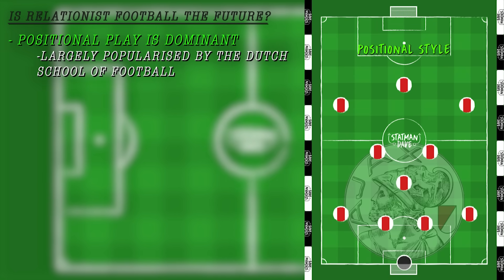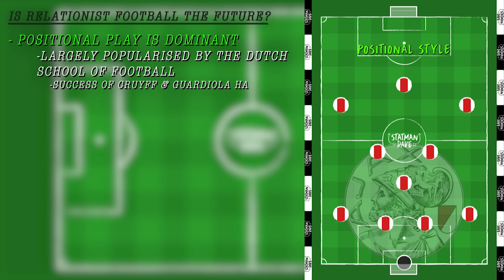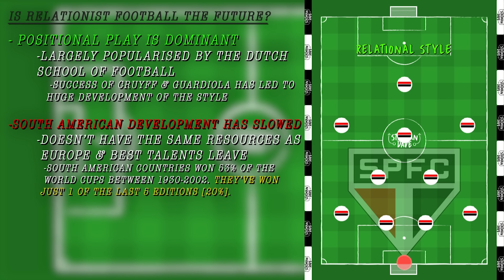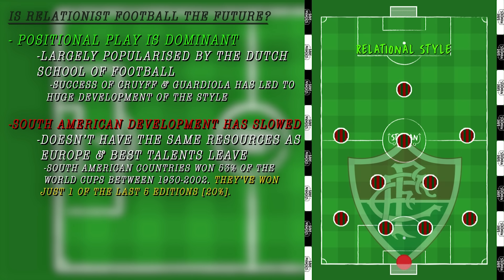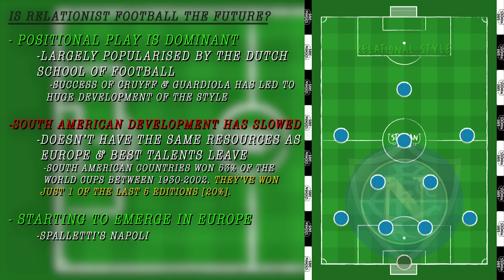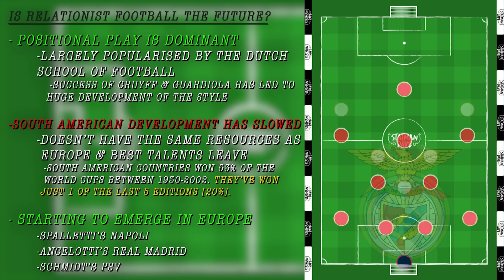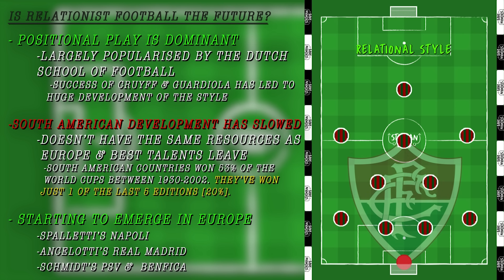Currently, positional play is the dominant style in the world, descended from the Dutch school of football, and has had the most recent development at the top level of European football. South American football, and by extension the relational style, hasn't had the same level of money or top-level development since the 1980s. However, in recent years we've started to see a shift. Fernando Diniz might be to functional football what Pep Guardiola was to positional play. Luciano Spalletti used a form of functional play to guide Napoli to their first Série A title since the days of Diego Maradona. Carlo Ancelotti has thrived at Real Madrid using a similar, though far less extreme, approach, while Roger Schmidt quickly rose to prominence at PSV Eindhoven and now at Benfica. But for relational football to take over Europe, we'll likely need to see Diniz himself make the step over, and only once there are several disciples coaching in top European leagues will relational football reach its perfect form.